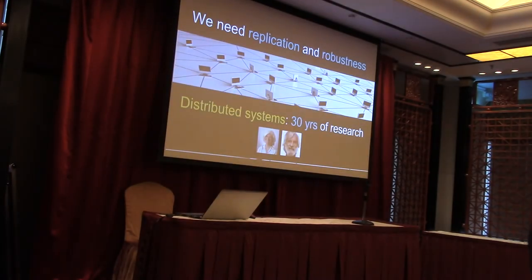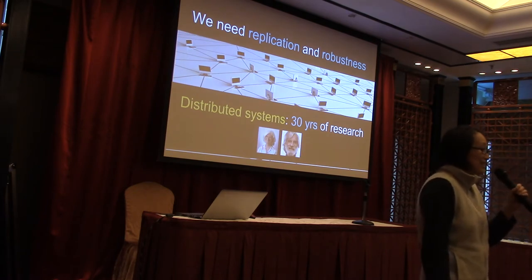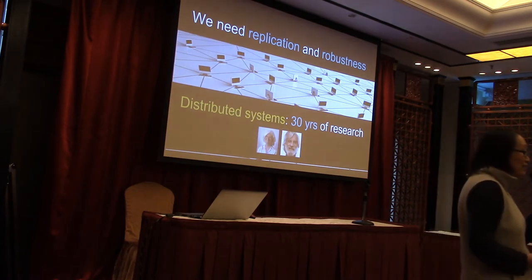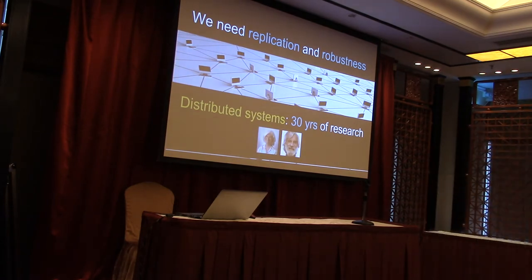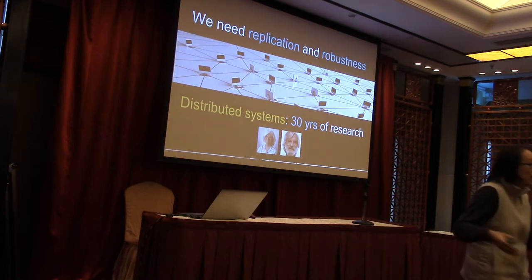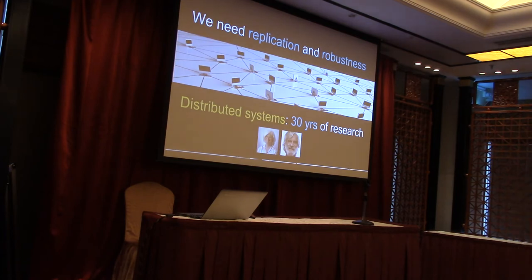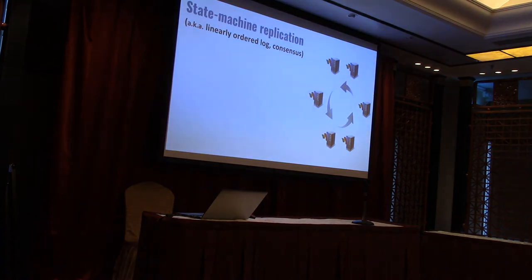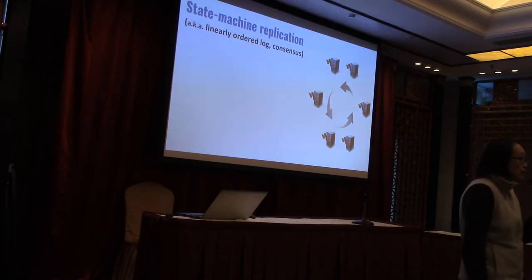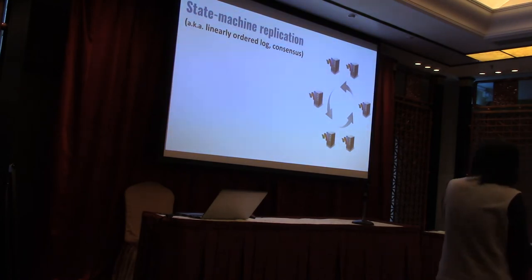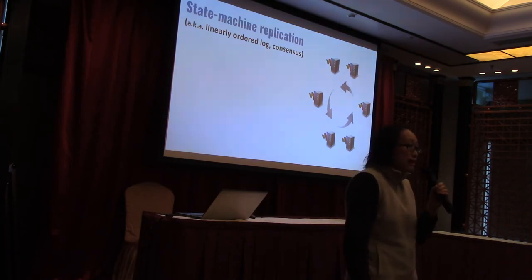The moral of this story is that we need replication and robustness. This is a very simple idea, and it is precisely this very simple idea that gave birth to an entire area of research called distributed systems, and there has been 30 years of work in this area. In distributed systems, we care about a very important abstraction called state-machine replication, also referred to as linearly ordered log or consensus.